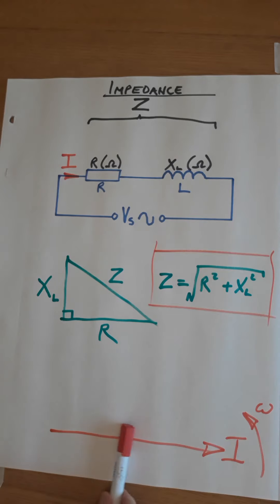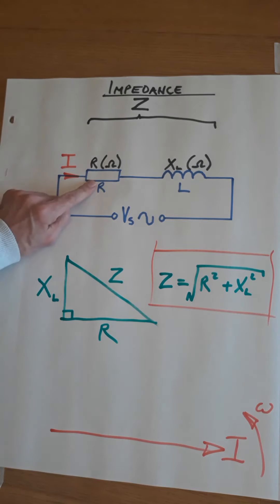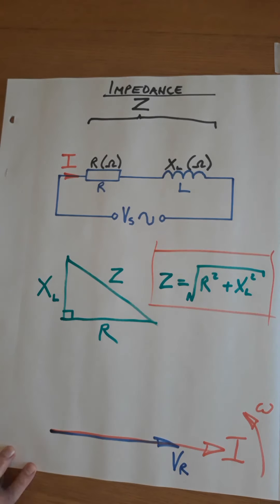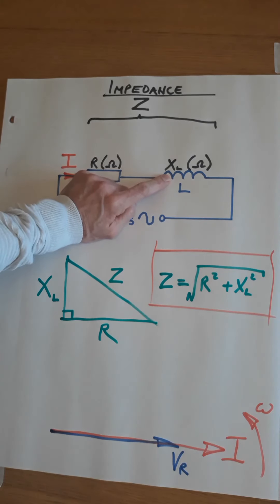Okay, the third and final part. If we come back to this, this is a series circuit. So current is common to all parts. That same current flows through the resistor and through the inductor. So when I draw a phasor diagram, I'm going to draw current first.